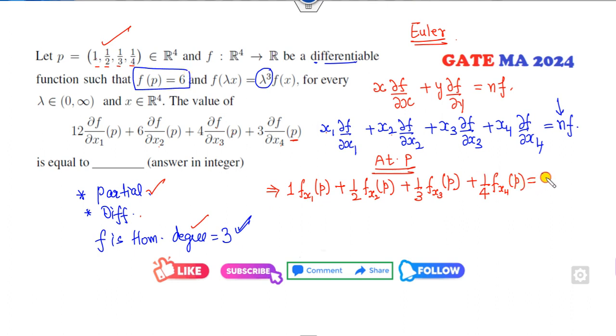So it's 3 into 6. Now your target is to take this, I can take the LCM. It will be my 12 of x1 into p plus 6 del f upon del x2 into p plus 4 f x3 plus 3 f x4 divided by 12.